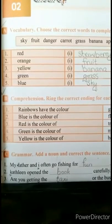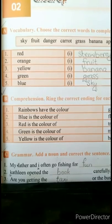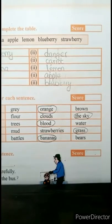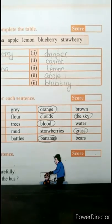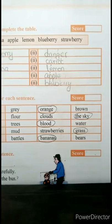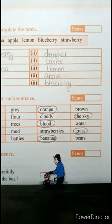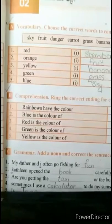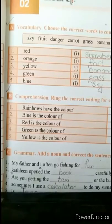Then the fourth one is: green is the color of — mud, strawberries, and grass. Mud means مٹی, strawberries جو ہمارے پاس red color کا fruit ہوتا ہے — تو یہاں پر grass جو ہے وو color میں green ہے, so you have to circle it.